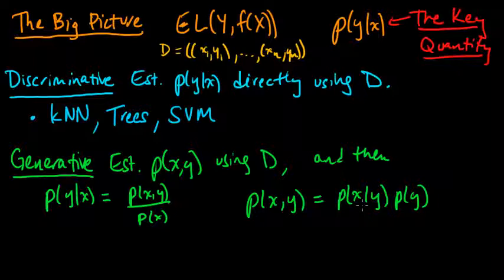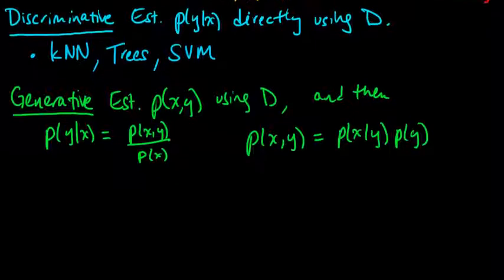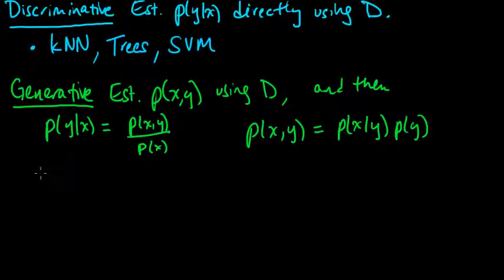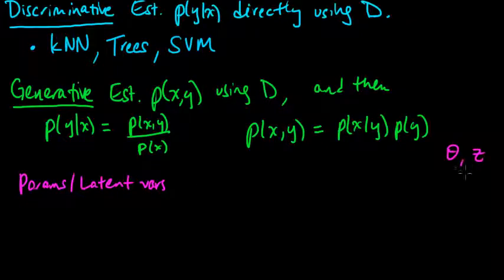So now, for both of these approaches, we'll typically have some parameters. We have parameters or latent variables. Latent variables are—we haven't really talked about them, but you could think about them for now as a sort of discrete form of parameters. Parameters we usually think of as continuous. Usually, people use theta for parameters and Z for latent variables, but I'm going to lump them all together into some theta for now, just to make things less complicated. So we have some parameters and or latent variables, theta, which govern the distribution.